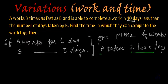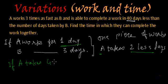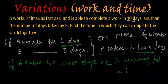So if A takes 40 less days, how many days will he work? If A takes 40 lesser days, he is actually working for 20 days. He is working for 40 divided by 2, that is 20 days.